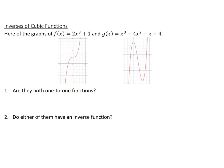Now we'll look at inverses of cubic functions. We introduced inverses back in Chapter 5 — a function had to be 1-to-1 to have an inverse that was also a function. Earlier in this chapter, we said quadratic functions do not have inverses because they're not 1-to-1. Here we have two cubic functions: f(x) = 2x³ + 1, and g(x) = x³ - 4x² - x + 4. Are they both 1-to-1, and do either have an inverse function?